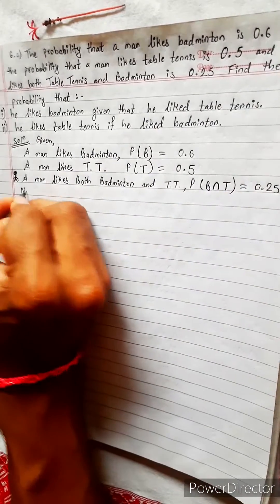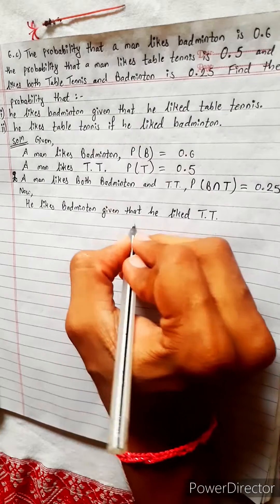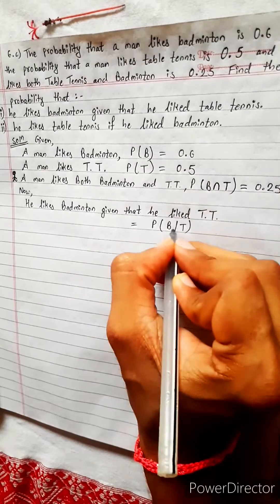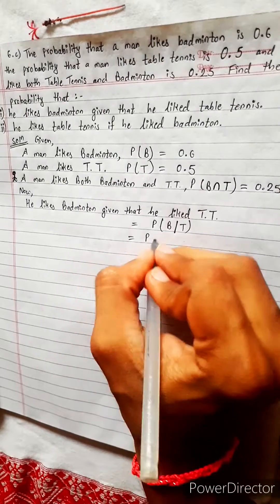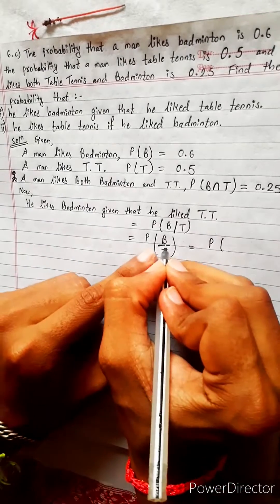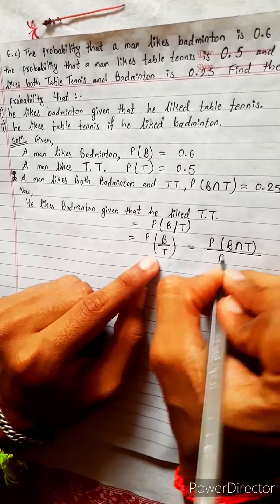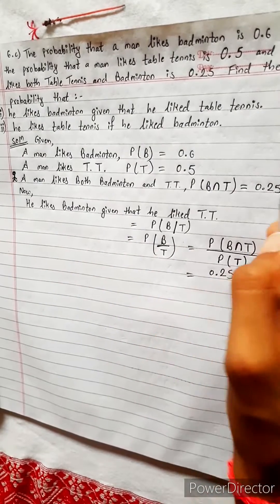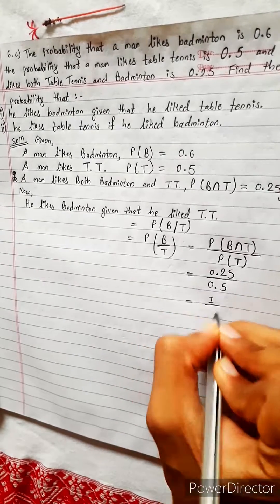Now find the probability he likes badminton given that he likes table tennis: P(badminton | table tennis). Using the conditional probability formula, that equals P(TT ∩ B) divided by P(TT), which is 0.25 divided by 0.5. Using a calculator, we get 1 by 2.